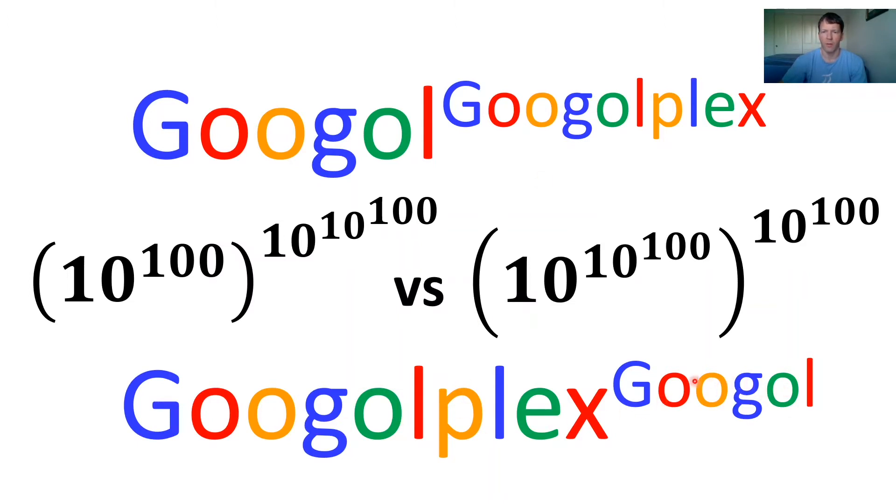So the way you write that down mathematically, this is a googol, 10 to the 100, one followed by a hundred zeros is a googol. And this is the Googleplex power, 10 to the googol power versus Googleplex, which is 10 to the googol power raised to the googol power. Which one's bigger? How does this turn out?